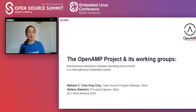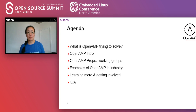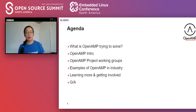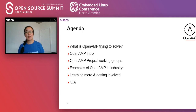Both of us were involved with the relaunch as a Linaro community project. So what are we going to cover today? We'll talk about what OpenAMP is trying to solve, give you some information about what the project is and how this project that started with a repository of code and some interested collaborators grew into a more mature open source project with working groups that are now tackling a wider scope. We'll cover examples of OpenAMP in industry, point you to resources where you can learn more, and let you know how you can get involved.